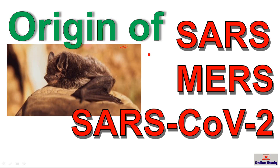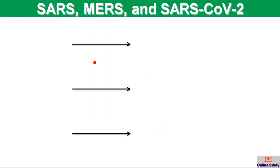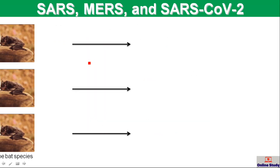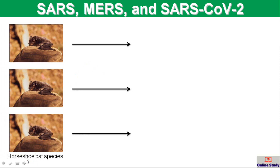Hello friends and viewers. In this video I am going to talk about the origin of the different types of coronavirus, like SARS, MERS, and the latest one, SARS-CoV-2. Very interestingly, all of the coronaviruses originated from the bat, which is called the horseshoe bat species. Here you can see the picture of this type of bat, which is responsible for these types of pandemics in the past and recent times.